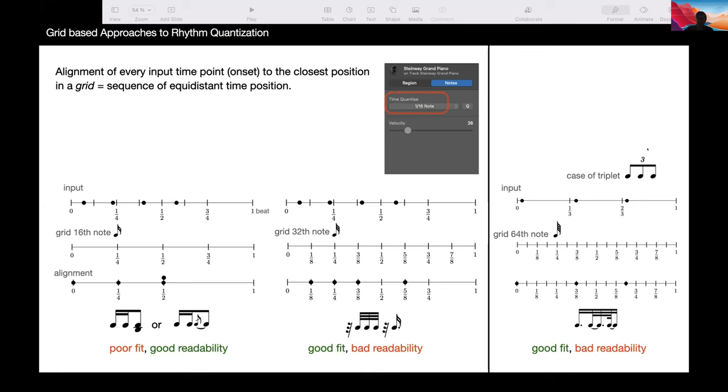This is particularly embarrassing in the case of triplets. For instance, here we want to align the triplets to a binary grid, 64 notes. And we obtain a very complicated notation that makes no sense in that case.